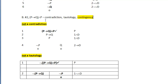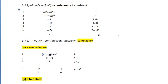The truth tree method indicates that this proposition is sometimes true and sometimes false — it all depends upon the truth values of P and Q. So this is how you use the truth tree method to determine whether a set of propositions is consistent or inconsistent, and also how to determine whether a single proposition is a contradiction, tautology, or contingency.